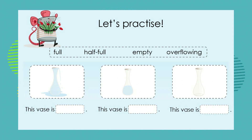Let's look at the next example. Again, we have a word box of full, half full, empty, and overflowing. This time the object we have is a vase. If we look at our first picture, I want you to look at the word box and see which word is going to best describe the vase — is it going to be full, half full, empty, or overflowing?